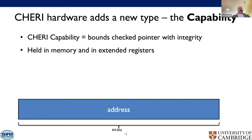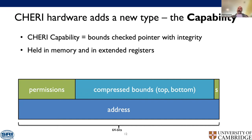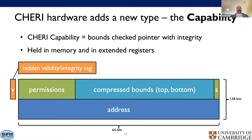CHERI adds a new hardware type: the capability. A CHERI capability is a bounds-checked pointer with integrity properties. It's held in memory and in extended registers. It takes the address and adds permissions and compressed bounds, as well as a sealed bit which makes the capability unmanipulatable — all in 128 bits. An additional single tag bit indicates validity. If you manipulate capability bits without a capability-aware instruction, the tag is cleared and destroyed. Likewise, if you try to increase the bounds, the tag is lost.